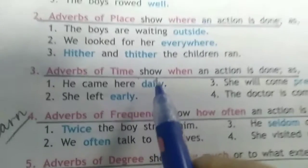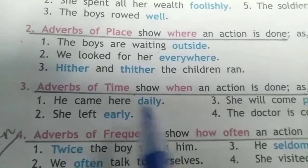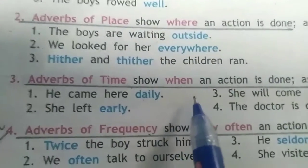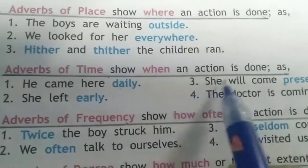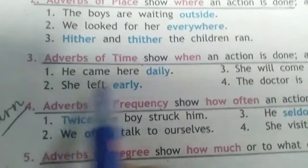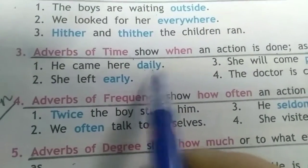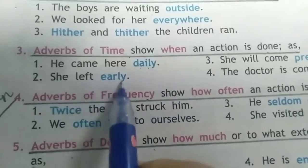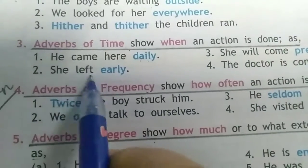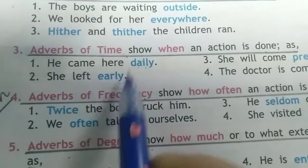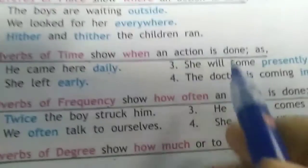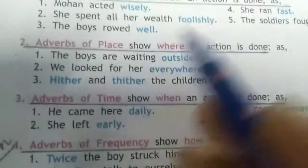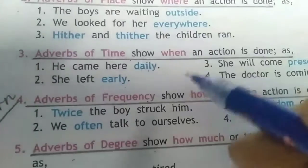Adverb of time tells us when something is done — when the action is done. For example: 'She came here daily.' When is she coming? Daily. 'She left early.' When did she leave? Early. These are adverbs of time. Learn the examples nicely, children.